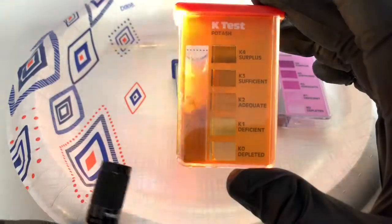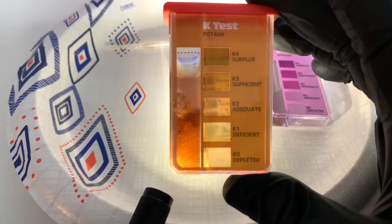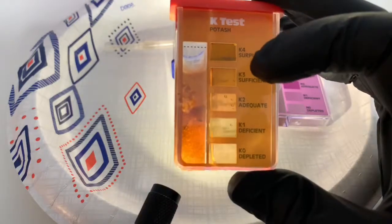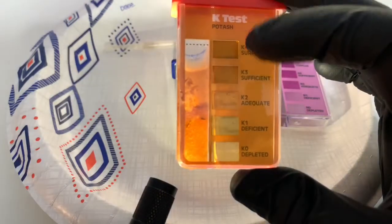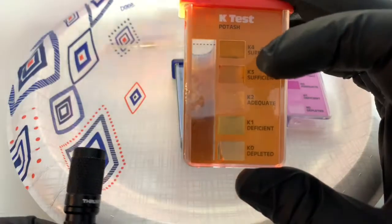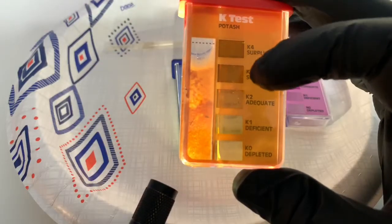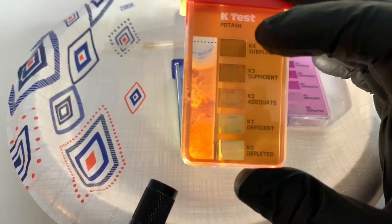So for K, we're actually just about sufficient. Yeah, so this is more of an orange color. We are definitely between, I would say, sufficient and adequate. So we're very close with the K.